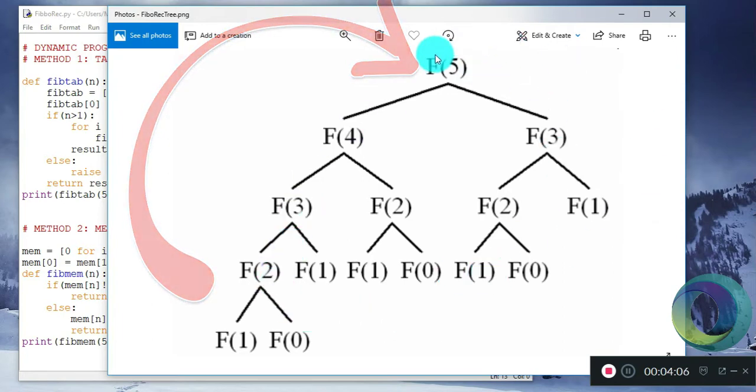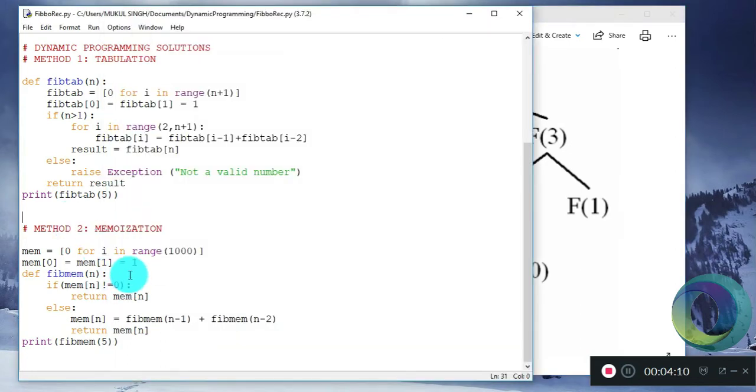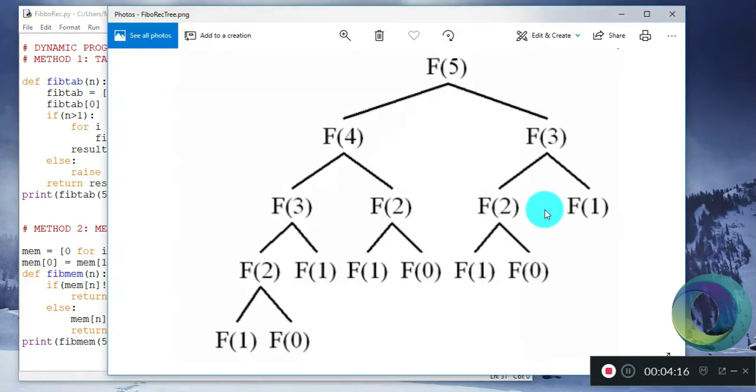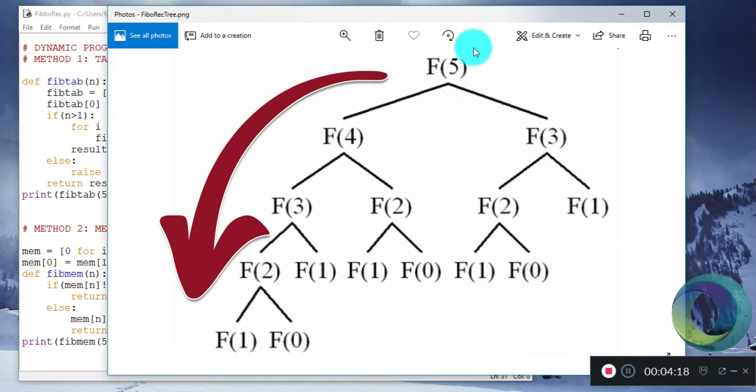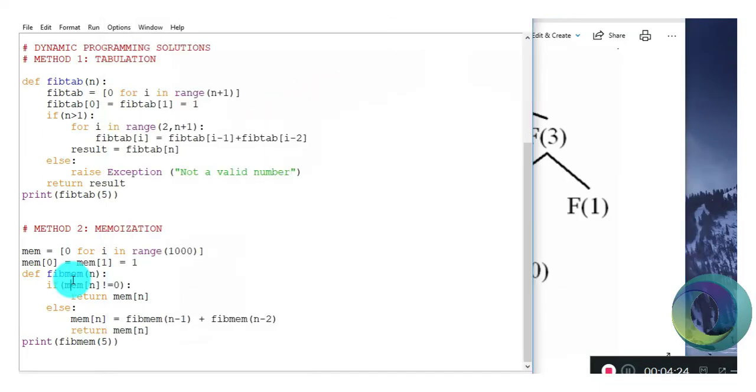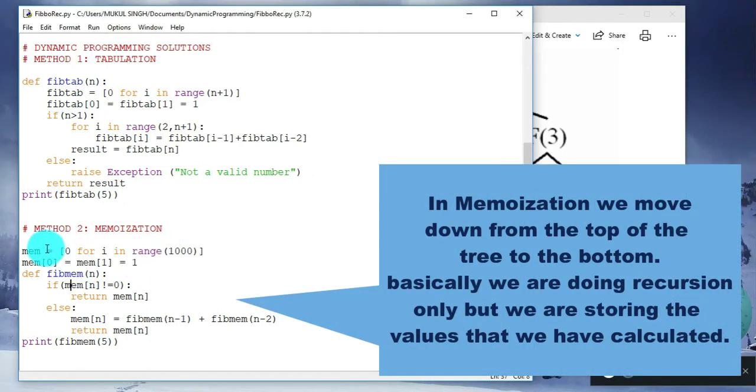The second method to apply dynamic programming is memoization. This is known as the top-down approach. In this we start at the top of the tree and move down to the bottom. For this we need a global array.